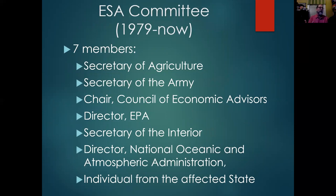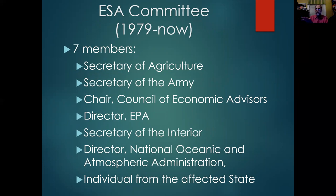It's called that in a sarcastic way. Basically, when they have these conflicts, they go, 'Okay, which do we side with — the species or the project?' They're playing God — they're going to decide maybe a species goes away. It's comprised of the Secretary of Agriculture, the Secretary of the Army, the Chair of the Council of Economic Advisers, the EPA Director, the Secretary of the Interior, and the Director of the National Oceanic Administration.